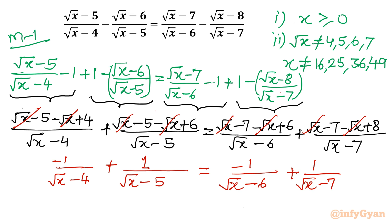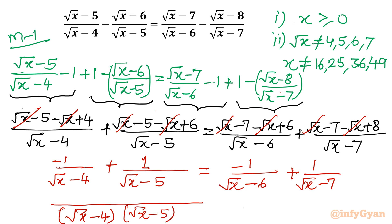Now I will take LCM once again. In the denominator on the left hand side I will write (√x − 4)(√x − 5), and on the right hand side (√x − 6)(√x − 7).